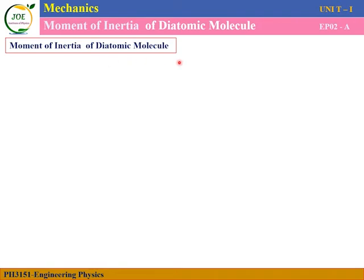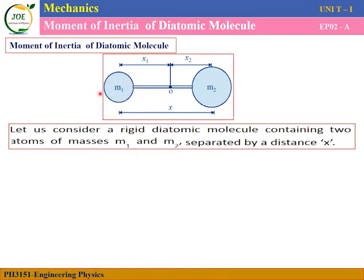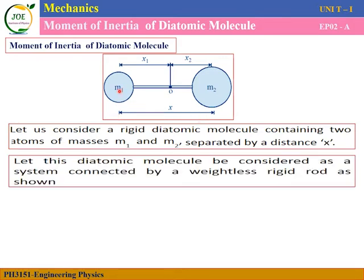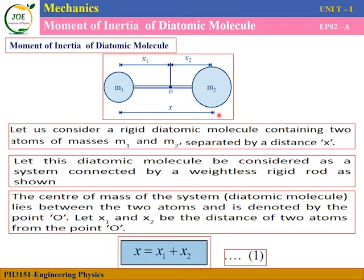Now we calculate the moment of inertia for a diatomic molecule. A diatomic molecule means 2 atoms. We have two atoms: atom 1 has mass m1 and atom 2 has mass m2. The two atoms are connected by a rod. The entire mass of the two atoms is concentrated at a particular point — the center of mass. The distance from m1 to the center of mass is x1, and from m2 is x2.